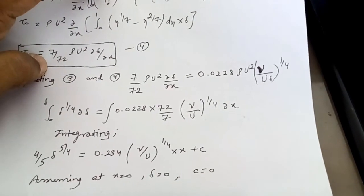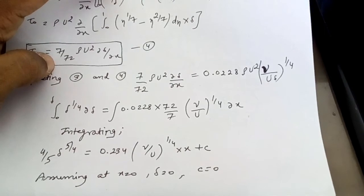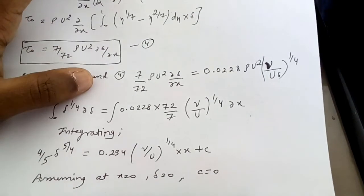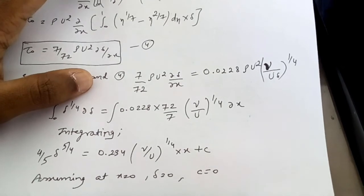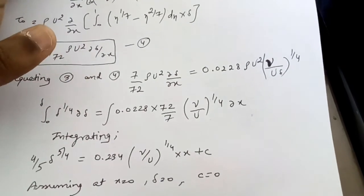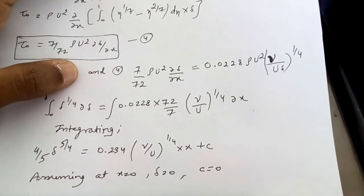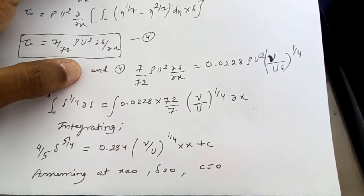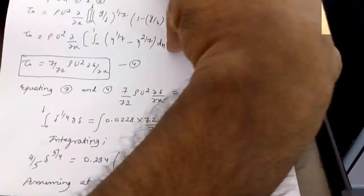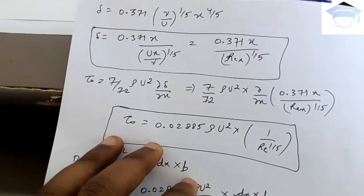Solving for δ by taking (4/5) to the other side and raising to the power 4/5, we finally get: δ = 0.371 (ν/U)^(1/5) x^(4/5), which can also be written as δ = 0.37x / Re^(1/5).